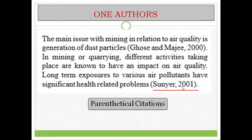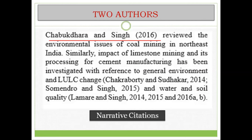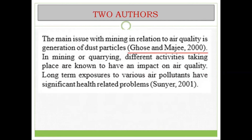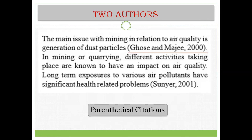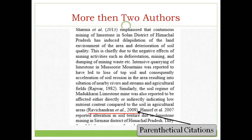In the case of two authors, the word 'and' is used to separate the author names in narrative citation. For two authors in parenthetical citation, a comma is used to separate the author's last name and the year of publication. If you have more than two authors, you use the word 'et al.', which means 'and others'. In the case of parenthetical citation at the end of the sentence, the author's last name, 'et al.', and a comma are used to separate from the year of publication.